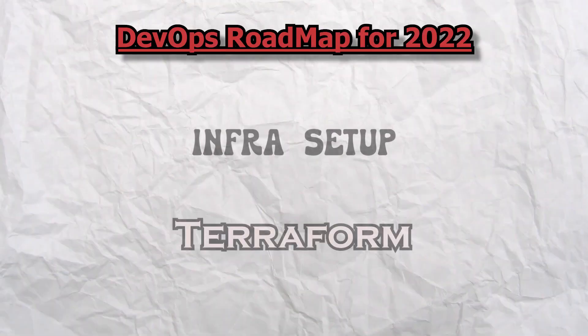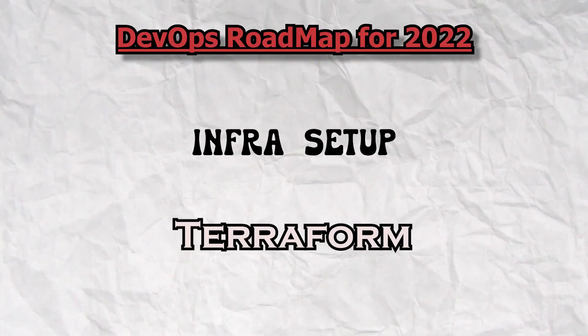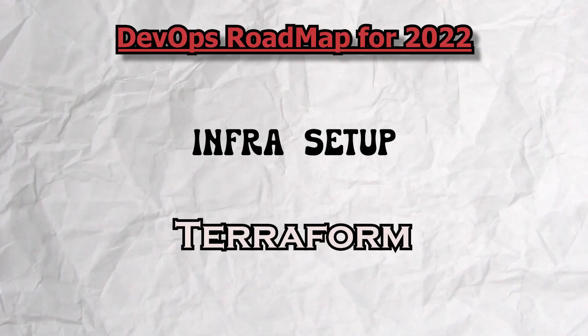Segment twelve is infrastructure setup, and nothing beats Terraform here. You need to understand how to initialize Terraform, how to create infrastructure with it, and the key commands that help you write and run your infrastructure-as-code. There are only a few commands in Terraform, but understanding how to write and structure the configuration files is essential.